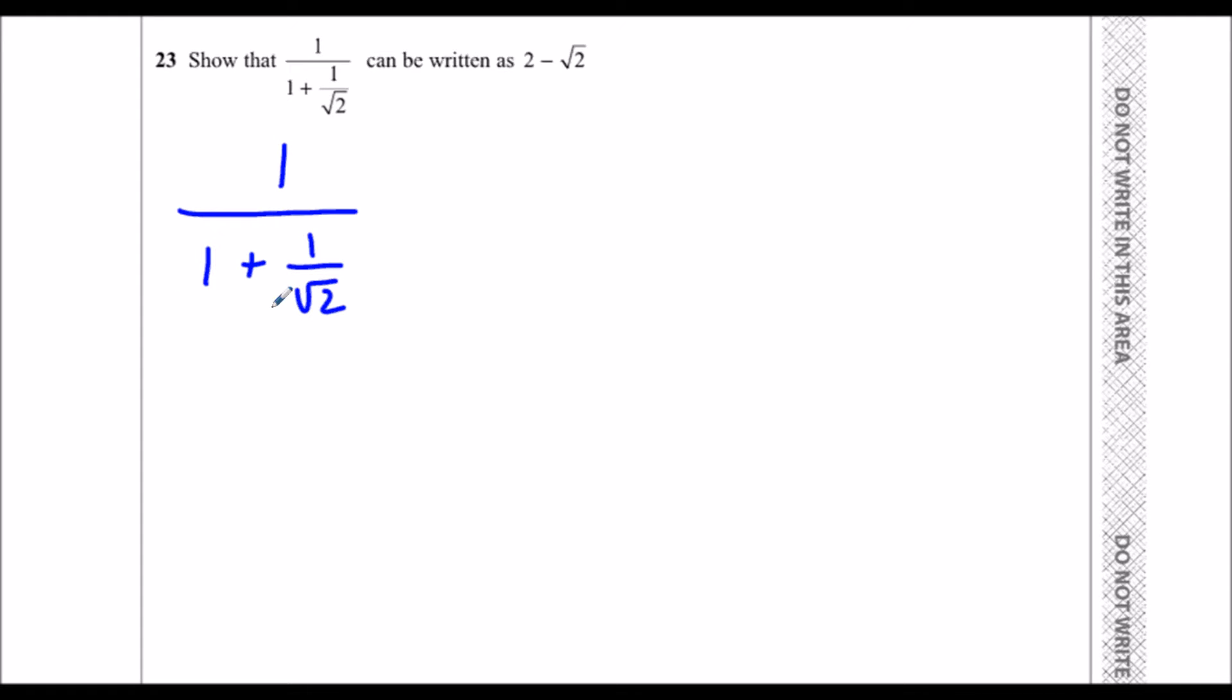I'm going to leave this as it is for now. Whenever you want to rationalize the denominator with two terms on the bottom, with one being a surd, we need to multiply it by the same thing but with a minus in the middle.